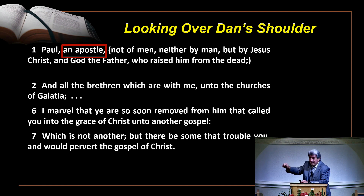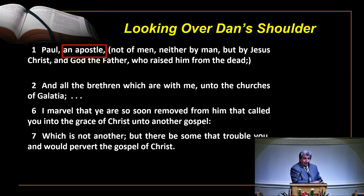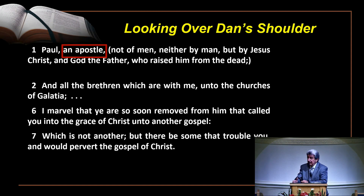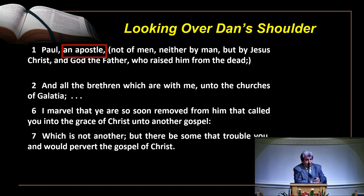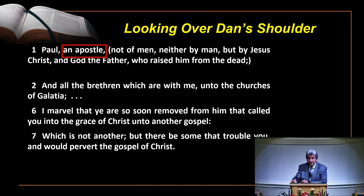A disciple is one who has been disciplined — an individual who is a student. There were individuals who were learners, people Jesus was teaching. He calls them together and from them picks out twelve men. You read the parallel in Matthew chapter 10, and the Bible says he sent them. An apostle is one sent — that's the Greek word. So an apostle equals 'one sent.'